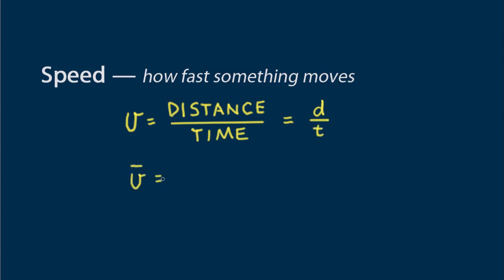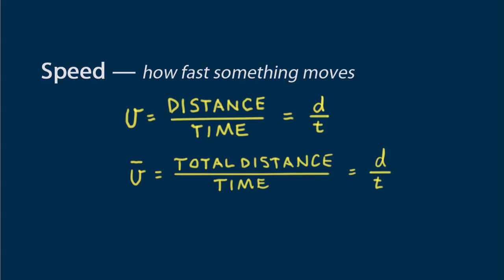When we talk about average speed, we're talking about the total distance covered in a particular time interval. So average speed is total distance covered per that time interval. In shorthand notation, v bar equals d over t. The bar over the v indicates average speed.